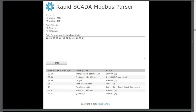Within Ethernet/IP networks, addressing will be passed via standard layer 2 and layer 3 addressing. By default, Modbus TCP is transmitted over TCP port 502.